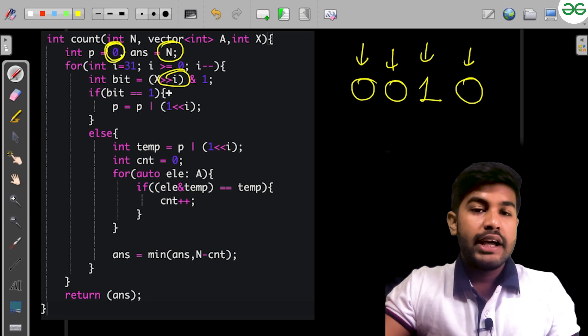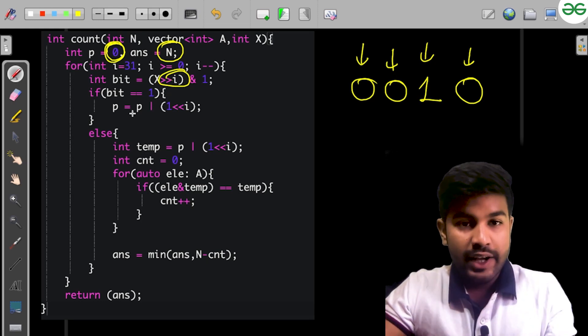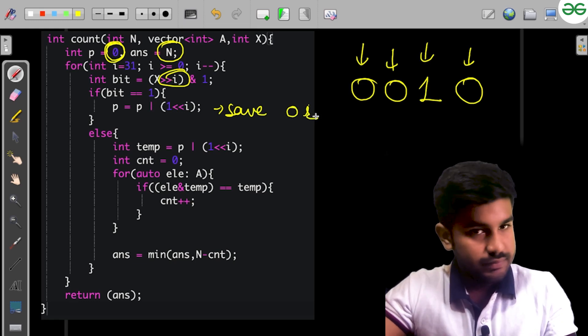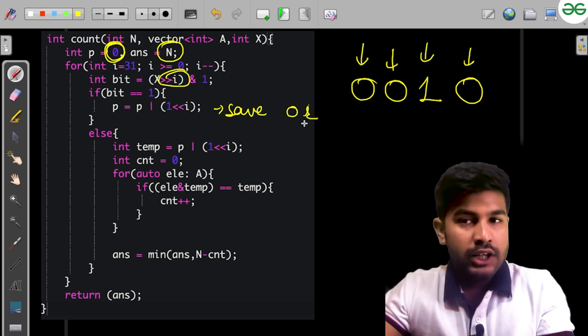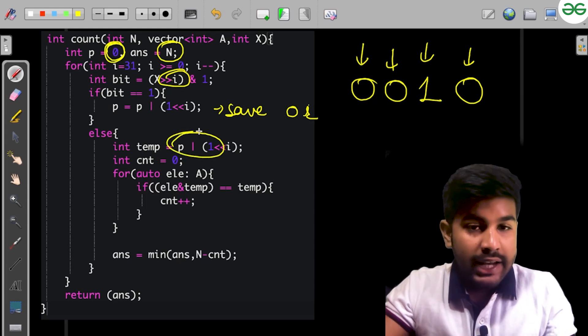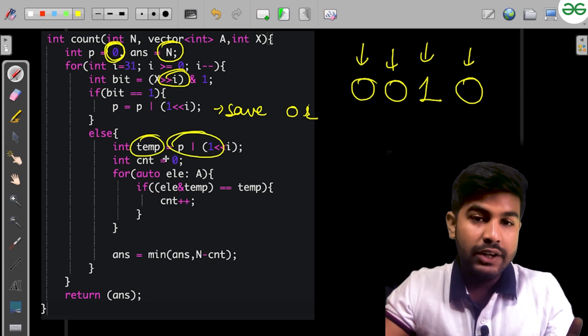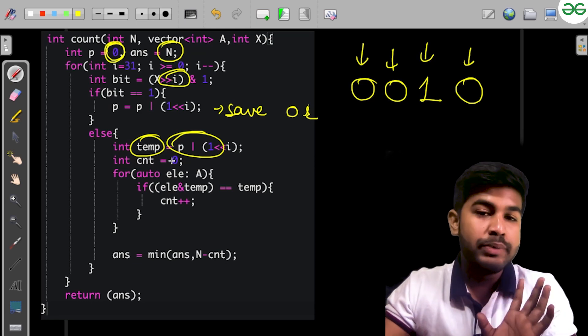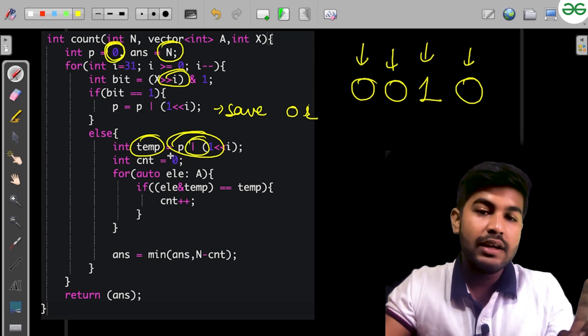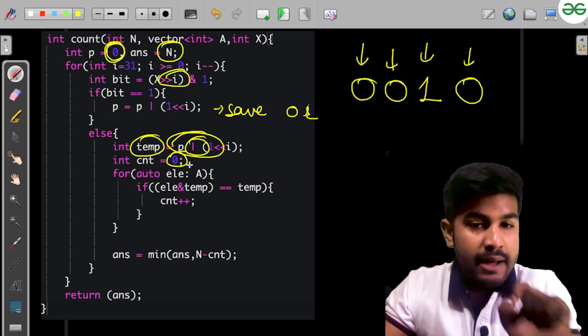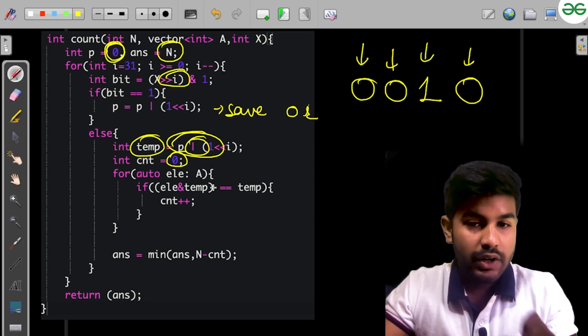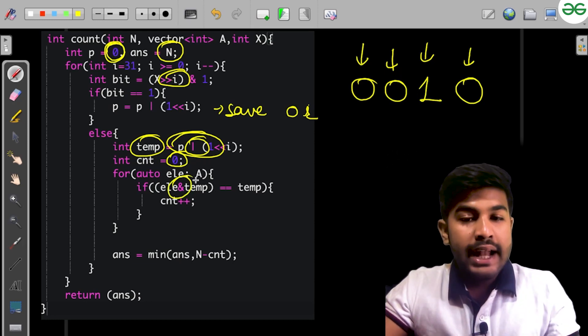We're taking out the bit. If it's set, save it using the OR function. If the bit is not set, the bits which are already set we want those values, plus the current bit needs to be set, so we save that to a temporary variable. Now we're counting the digits which don't need to be modified.